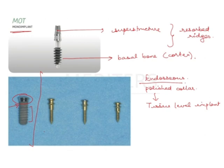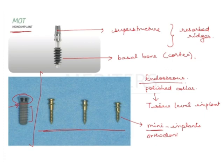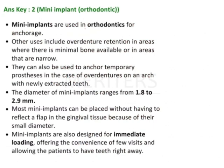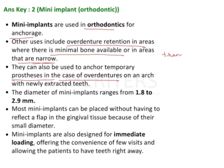The next images show orthodontic implants or mini implants. As the name suggests, mini means they are smaller in size and used for orthodontic anchorage purposes — for example, if you need to distalize something or need additional anchorage, you can use mini implants. Other uses include overdenture retention in areas with minimal bone or narrow ridges, and anchoring temporary prostheses with newly extracted teeth.